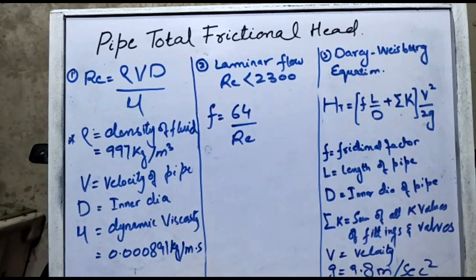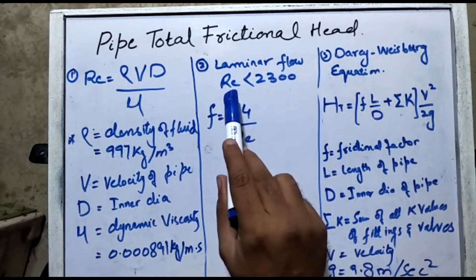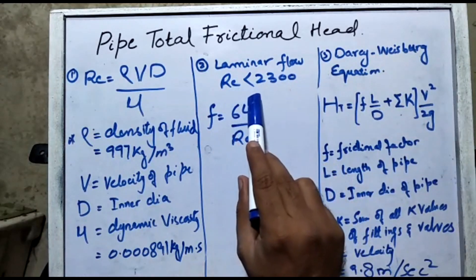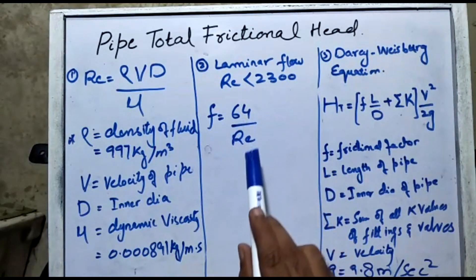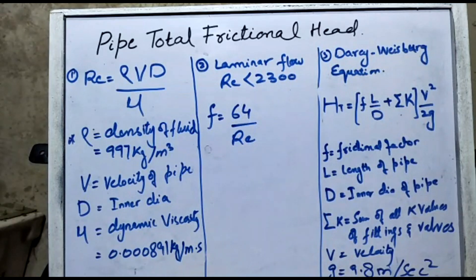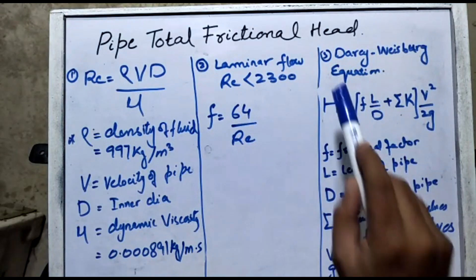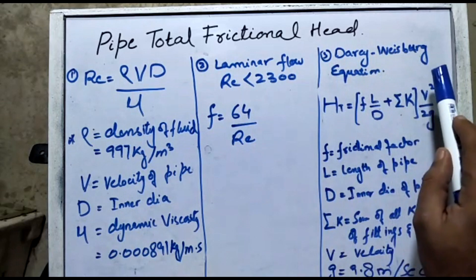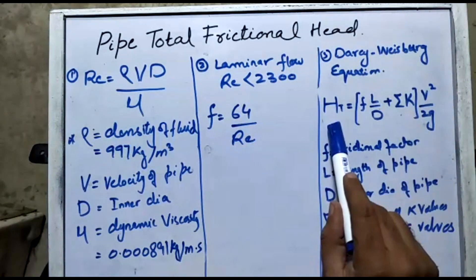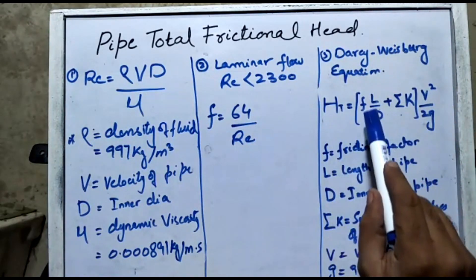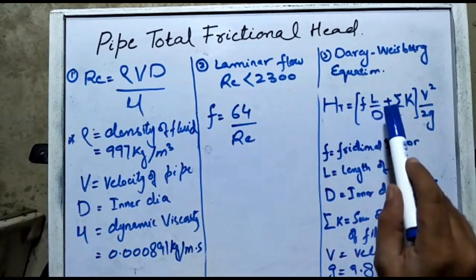The second formula is for laminar flow: if the Reynolds number is less than 2300, the friction factor f = 64/Re. The third and last formula we will use is the Darcy-Weisbach equation, which states that the total head loss equals the friction factor multiplied by the length over the diameter of the pipe...